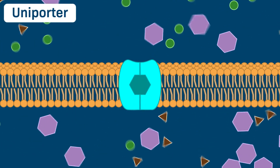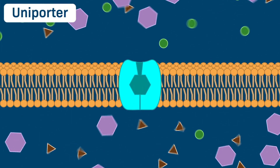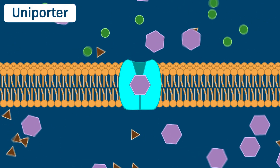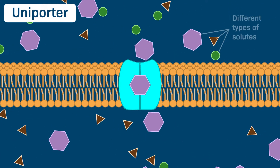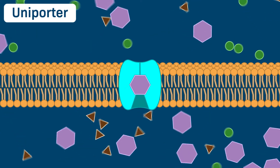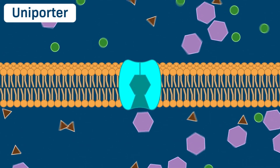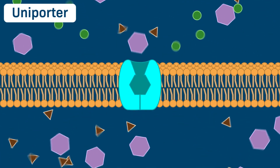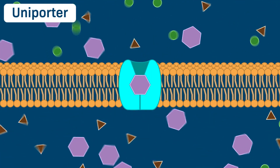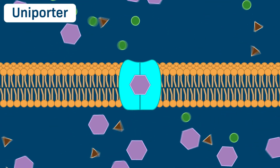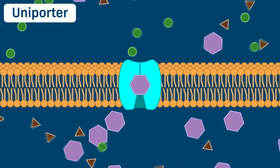In this example, there are three types of solute present, represented by a circle, a triangle, and a hexagon. Notice how a uniporter selectively binds only one type of solute — the hexagon — and shuttles it from one side of the membrane to another.